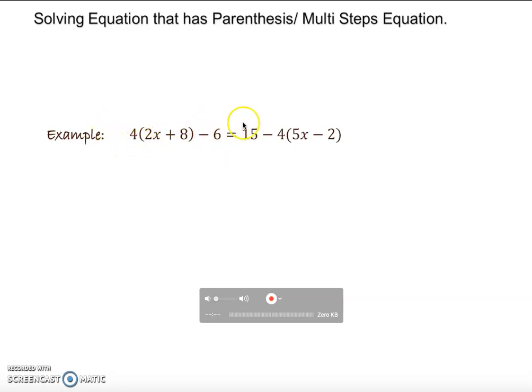Then once your parenthesis is done, look to see if you can combine anything on both sides. Then we isolate the variable by itself. In other words, we get all the variables on one side and all the numbers on another side. And then the last process is basically division.